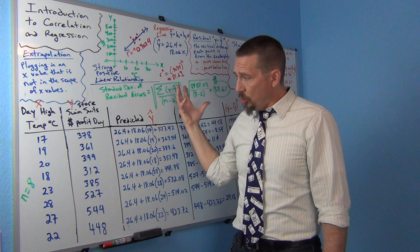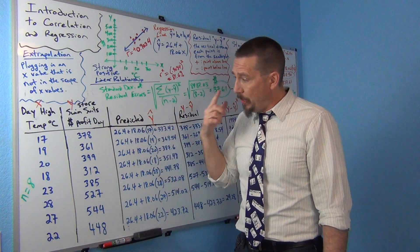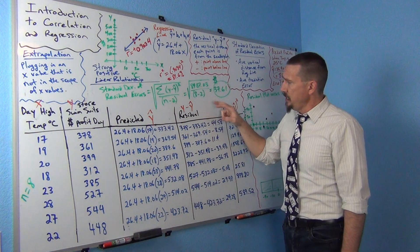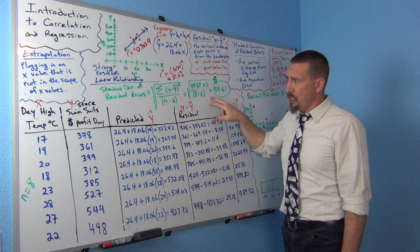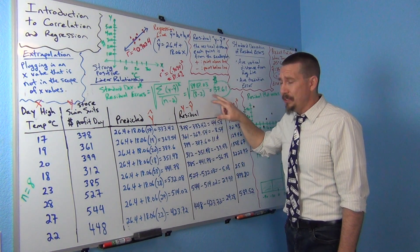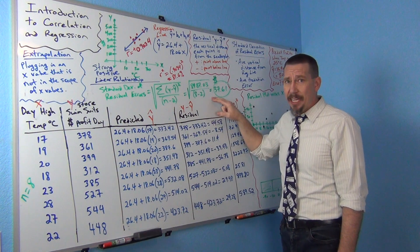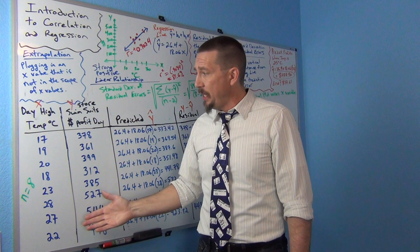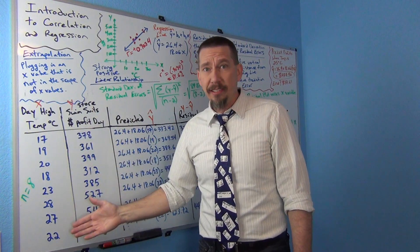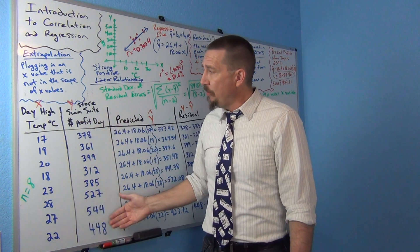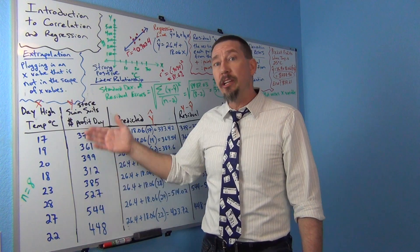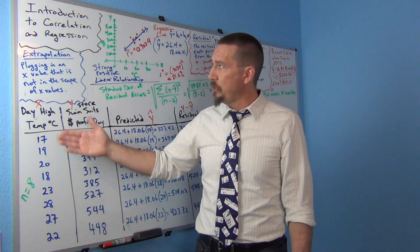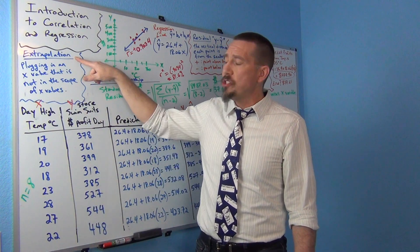Now if you go outside the scope — and people love to do that, by the way — then the error measurements, these residuals and the standard deviation of residual errors, don't really apply. This only applies if you're in the scope of the x values. Suppose the temperature was 0 degrees Celsius — this probably wouldn't be a formula that's going to give very accurate answers for that, because it's out of the scope of the x values. We call that extrapolation.